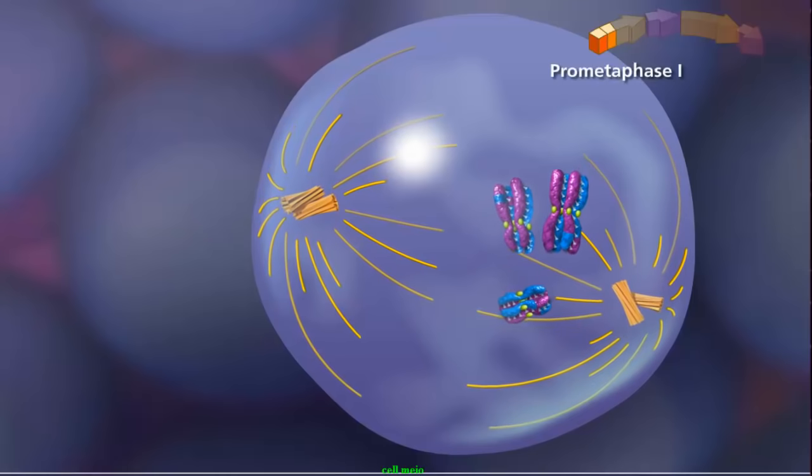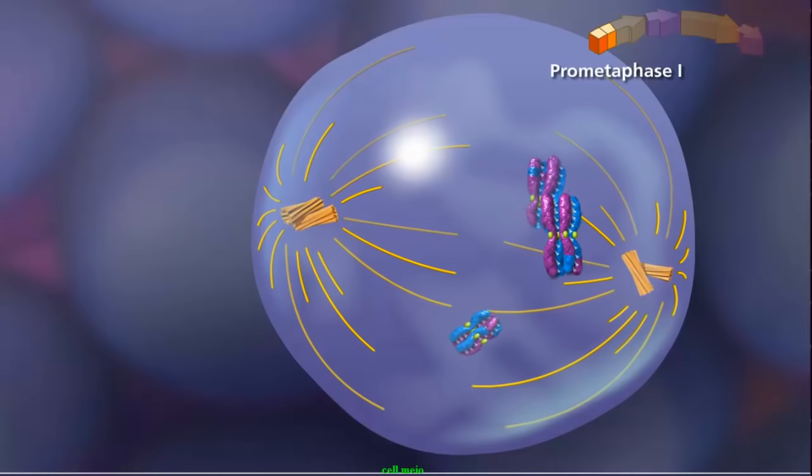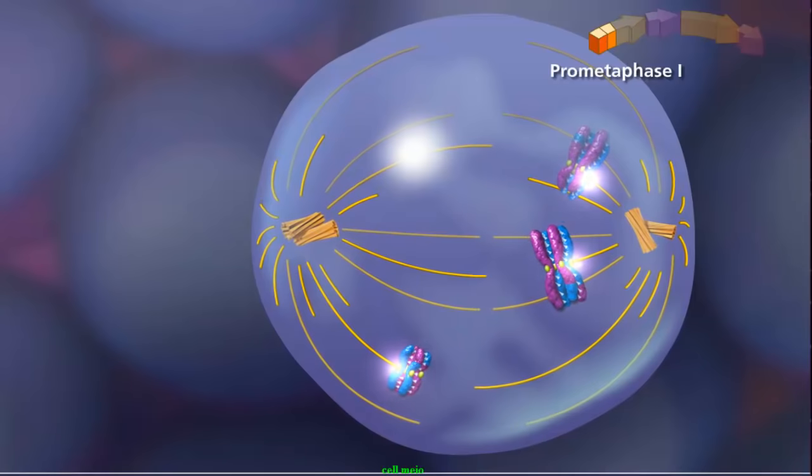In prometaphase I, with the paired centrioles in place, the meiotic spindle is fully formed. The sister chromatids attach to the spindle fibers by their kinetochores.